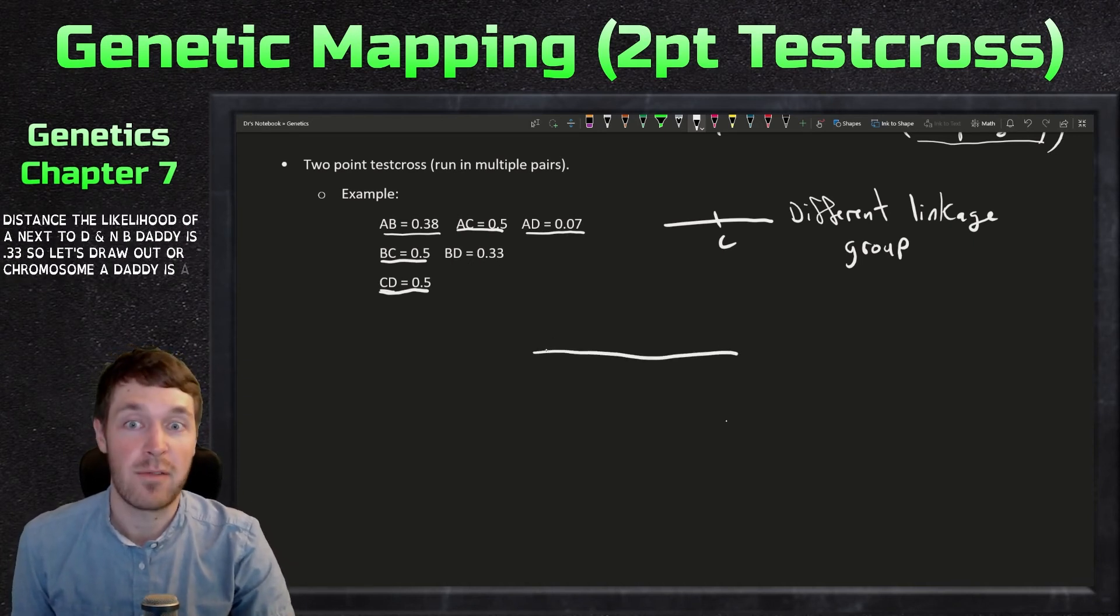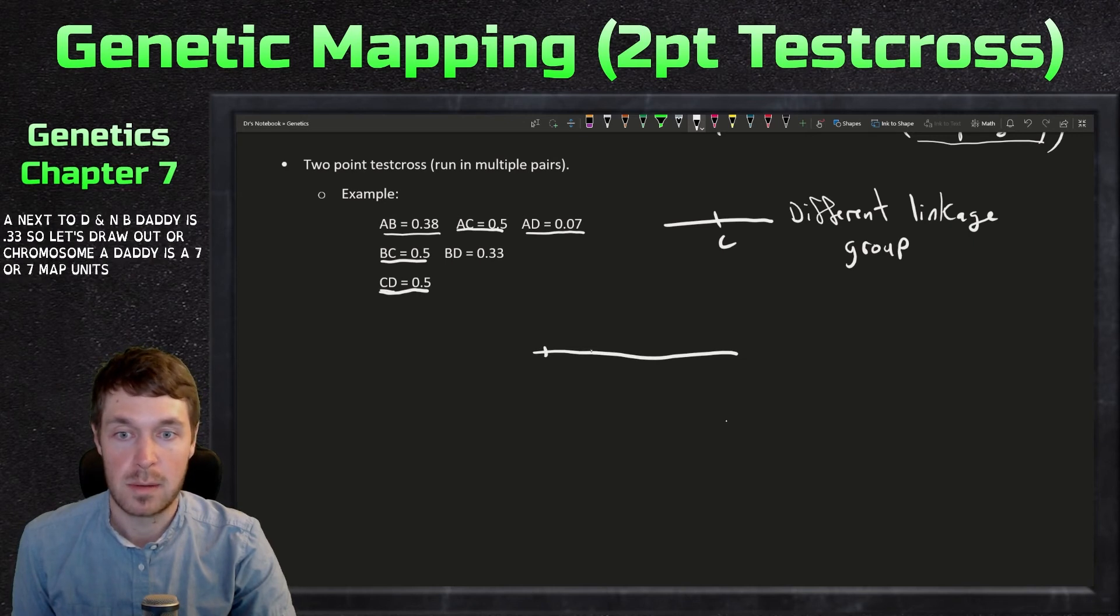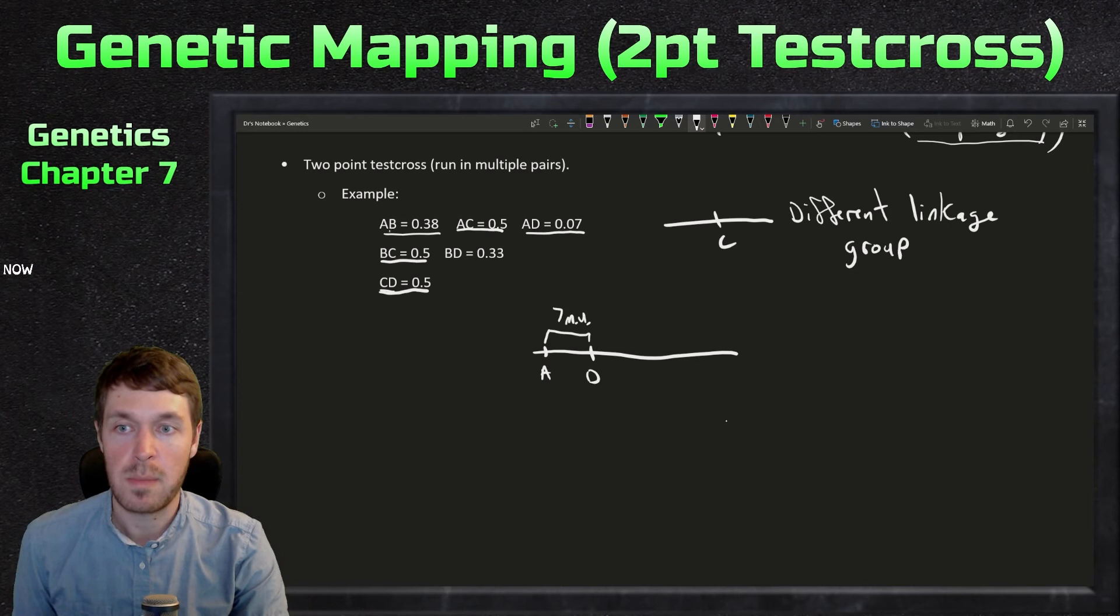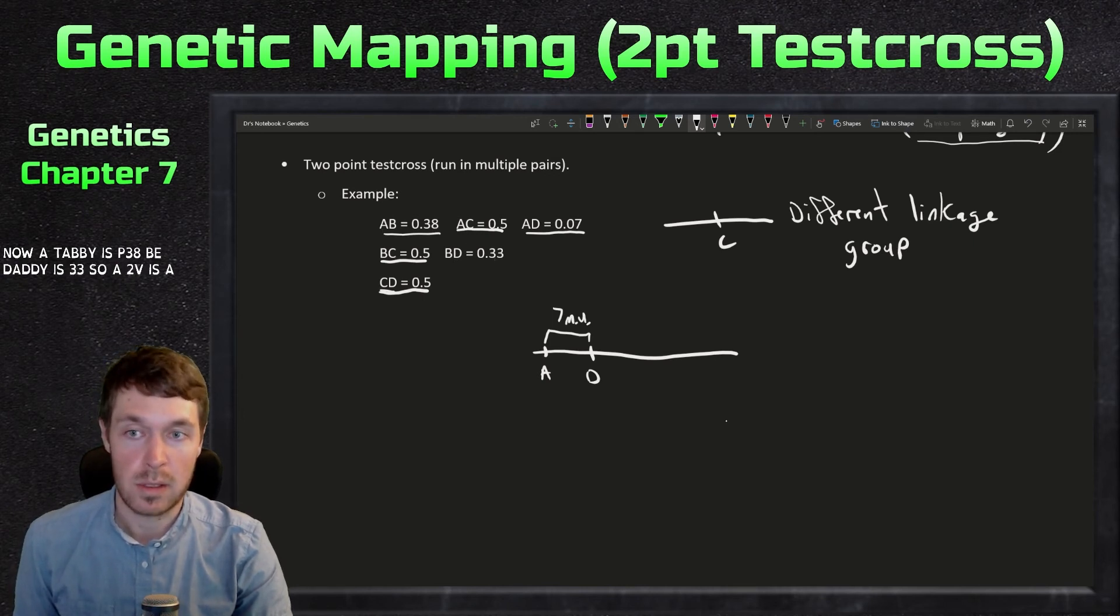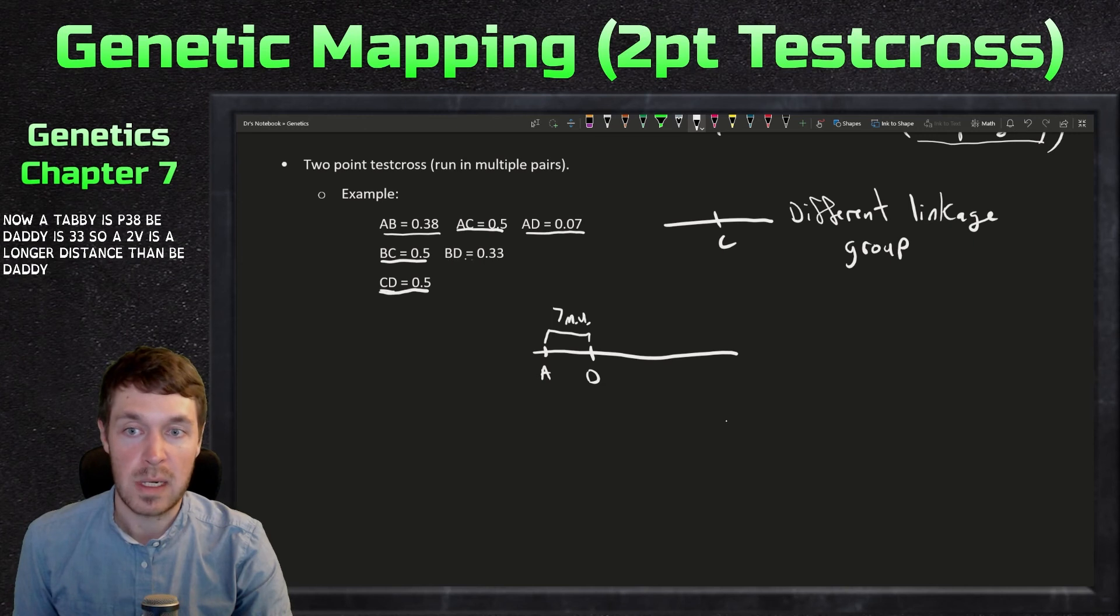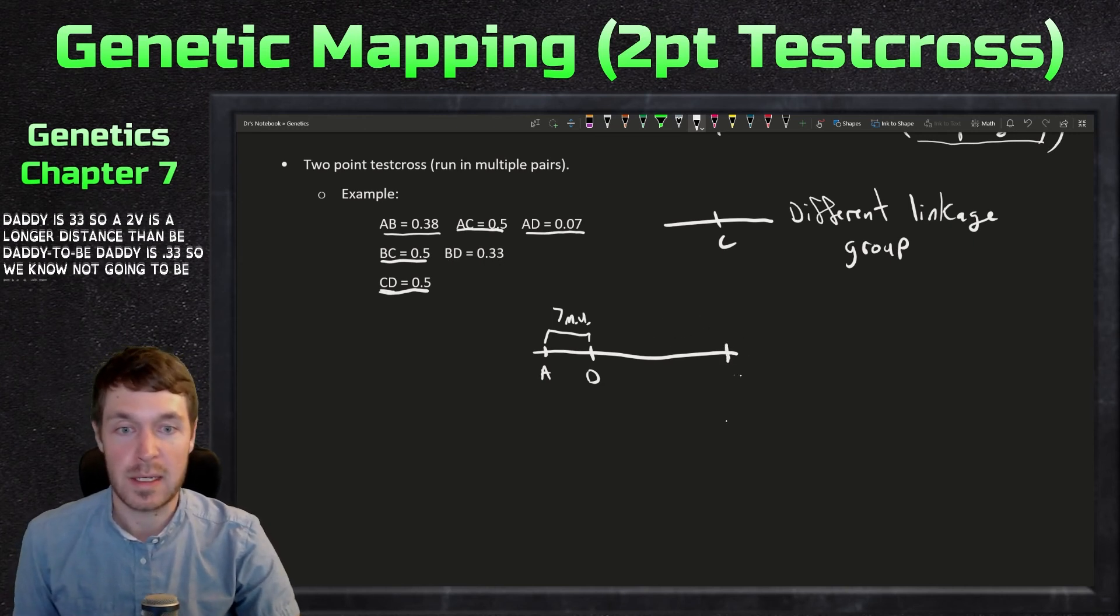So let's draw out our chromosome. A to D is 0.07 or seven map units. So we can figure that one out. Now A to B is 0.38. B to D is 0.33. So A to B is a longer distance than B to D. So B to D is 0.33.